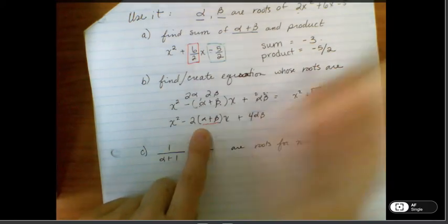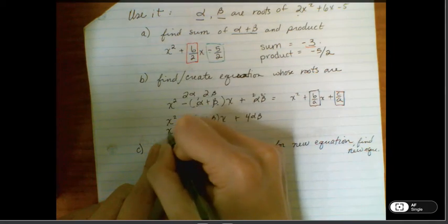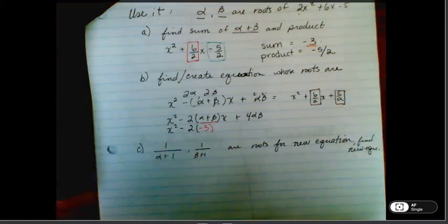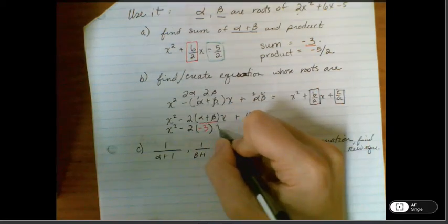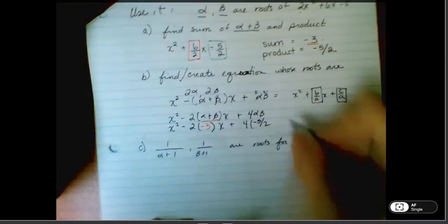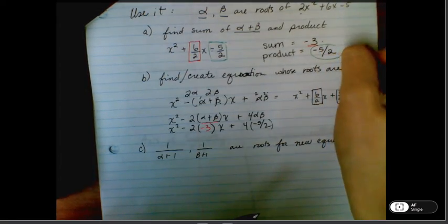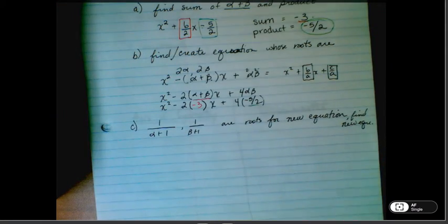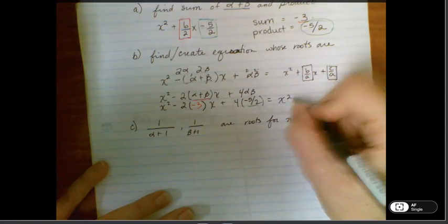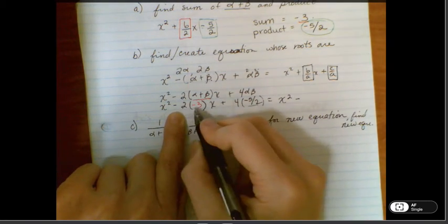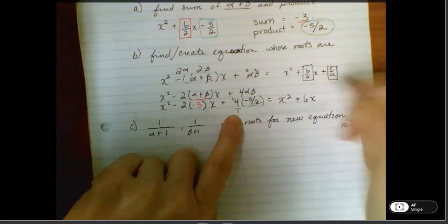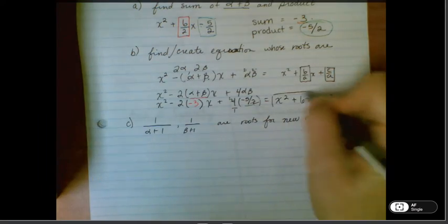So we know that alpha plus beta is negative 3, so let's go back and put that in. Negative 3 from up here, plus 4 times alpha times beta. So that's negative 5 over 2. We're going to simplify this out, and we're going to get the equation whose roots are double alpha double beta would be x squared minus 2 times minus 3 gives us plus 6x, and then we'll put that over 1 and cancel and make that a 2. So 2 times negative 5 is negative 10. So this is the equation that meets those requirements.